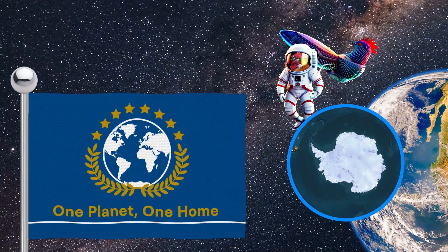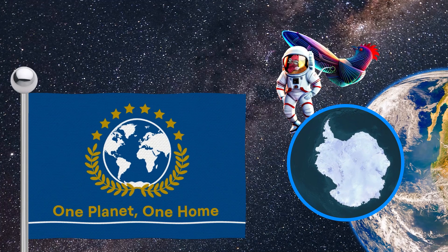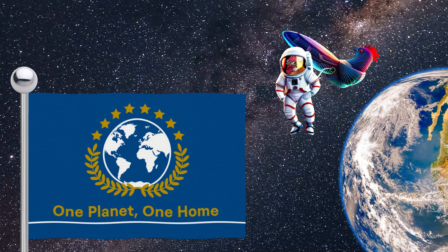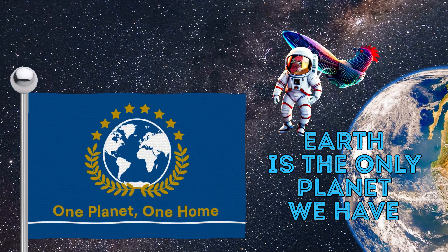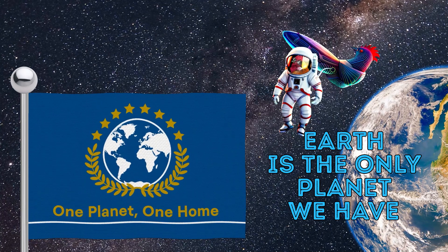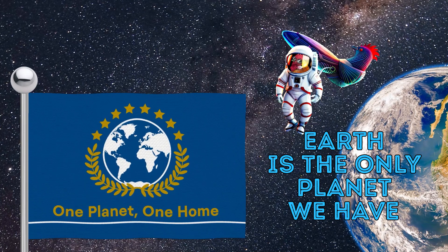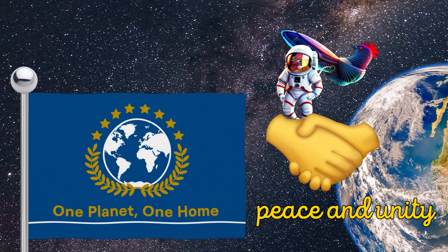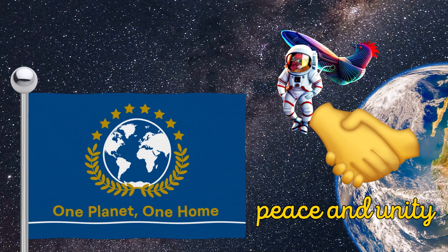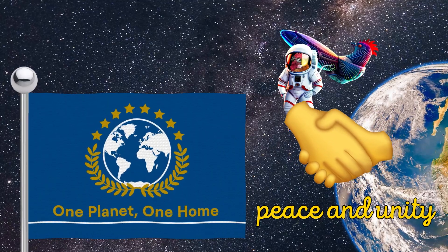The thin white line represents the polar ice caps and the fragility of the planet's environment. The phrase on the flag represents the idea that Earth is the only planet we have and that we must all work together to protect and preserve it for future generations. And finally, the circle of stars and the olive branches represent peace and unity among all nations and peoples of the world.